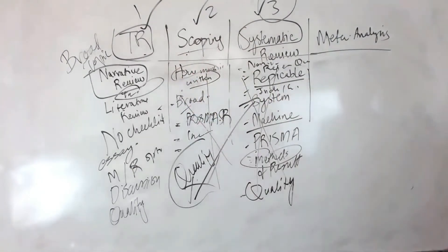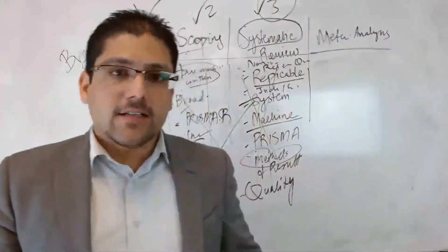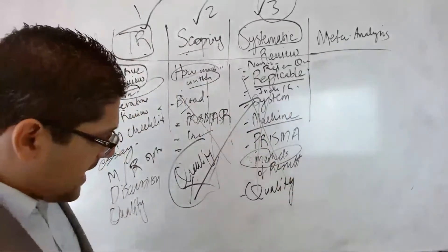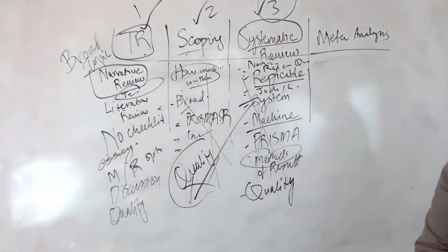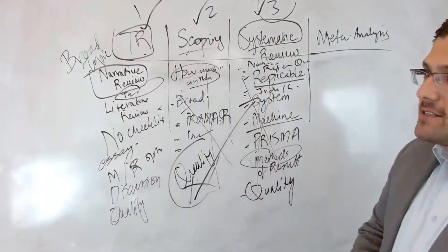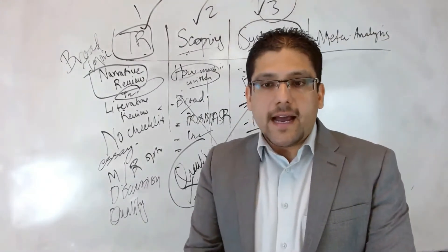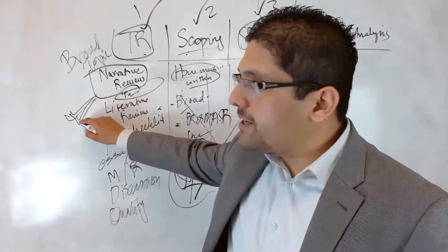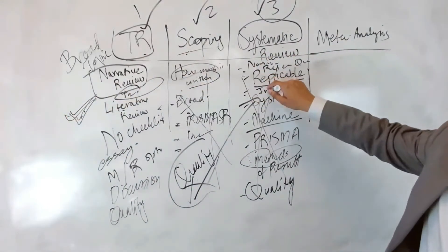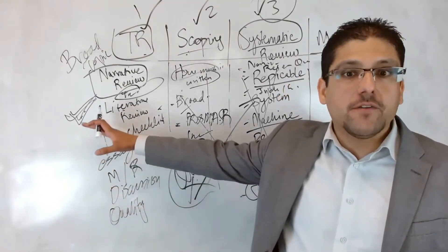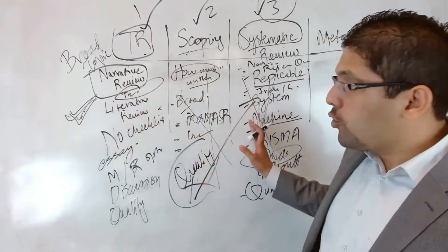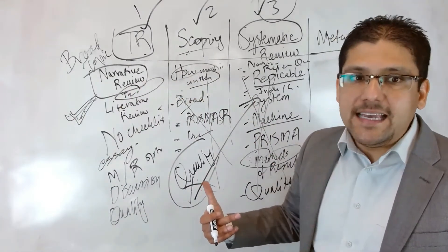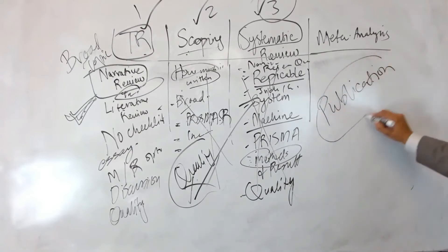A commonly asked question is: should I write a systematic review or a traditional review when I have exams and other responsibilities? If you are in that situation, go with a traditional review. Once you finish your traditional review, start working on a systematic review as your second paper. If you have time, write a systematic review; if you don't, write a traditional review first.